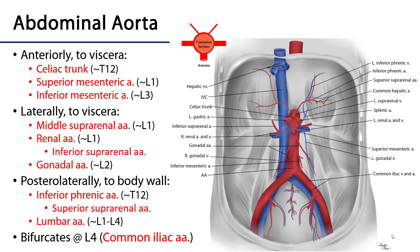The abdominal aorta enters the abdominal pelvic cavity posterior to the diaphragm at approximately the T12 level, at the aortic hiatus. The abdominal aorta is the continuation of the thoracic aorta and both can be construed as parts of the descending aorta.